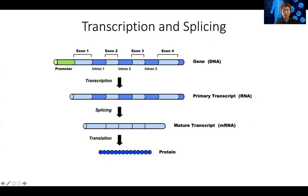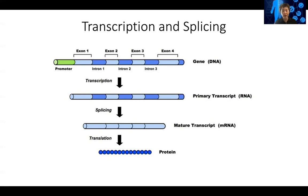Ideally, we want to get the protein abundance in the cell because the overall protein abundance really dictates the status of a particular cell, tissue, or organ. Unfortunately, the technology for measuring protein abundance, especially at genome scale, is quite limited. So RNA-seq is a proxy for the overall cell state, which measures the expression level of all different genes in the genome.